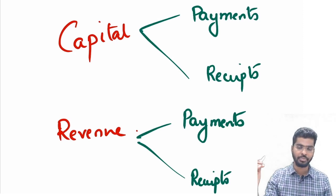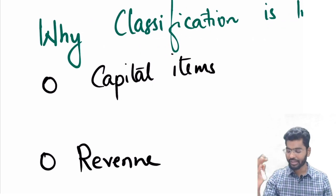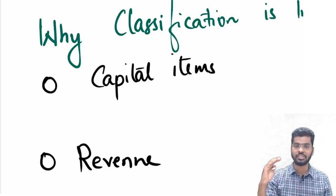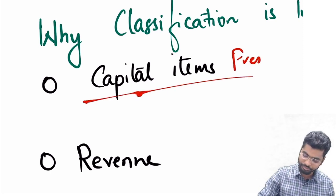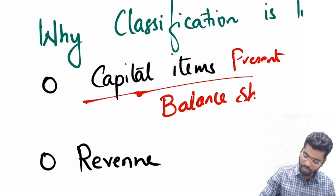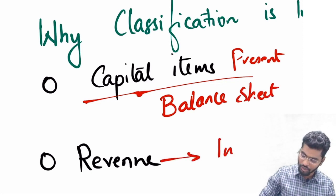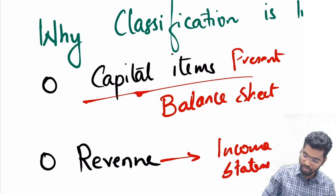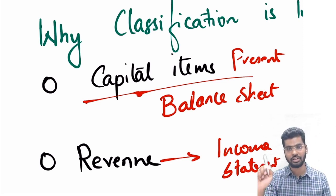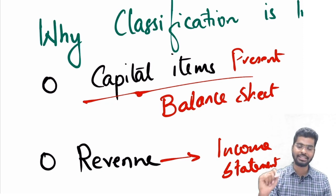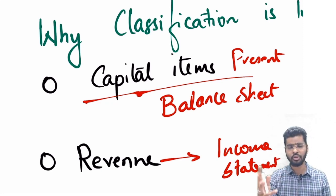So let me first comment on why classification of an item into capital or revenue is important. When I say an item is to be classified as capital or revenue, this entirely affects the way I present it — because all the capital items appear in my balance sheet and all my revenue items appear in my income statement. That is why differentiation becomes quite important: capital items go to the balance sheet, and revenue items go to the P&L account, or what we call the statement of income.